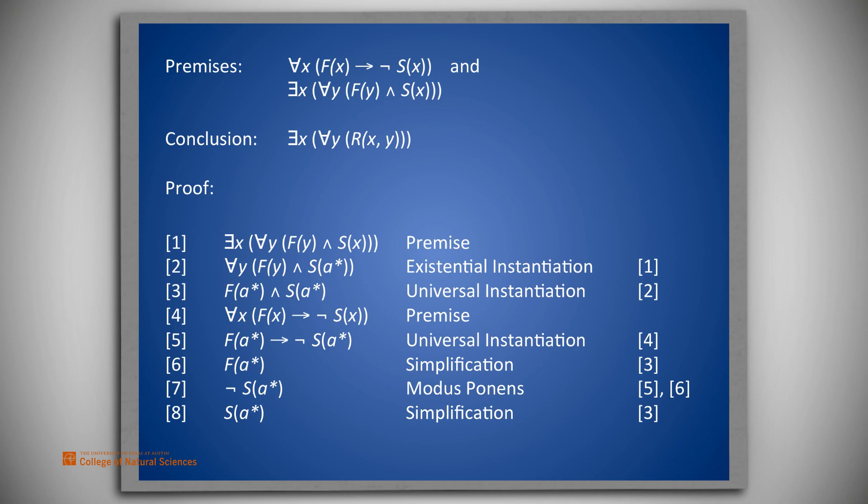Now we see the contradictory premises in lines 7 and 8, so we are justified in writing any valid formula on line 9. The one we choose is our conclusion: there exists an x such that for all y, r of x and y. That concludes the proof.